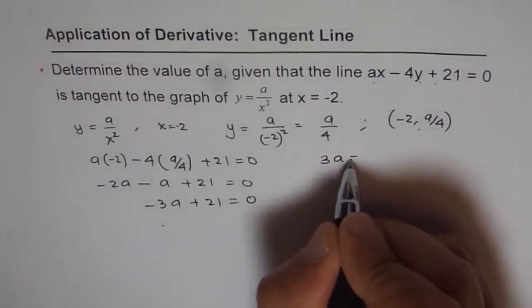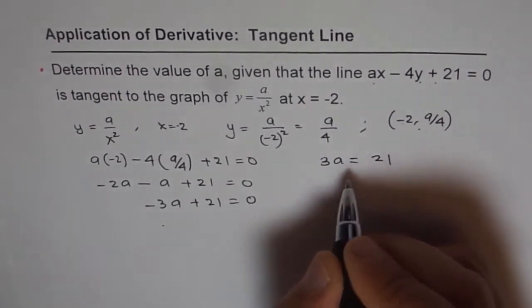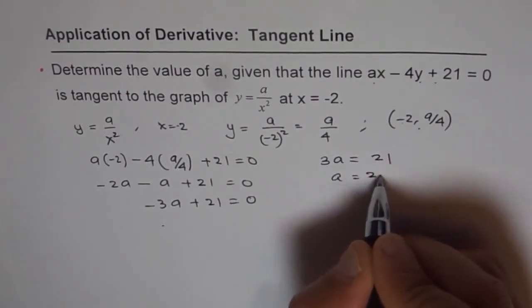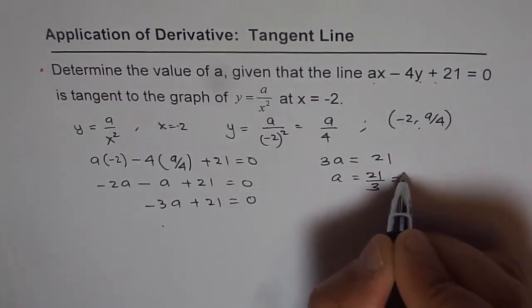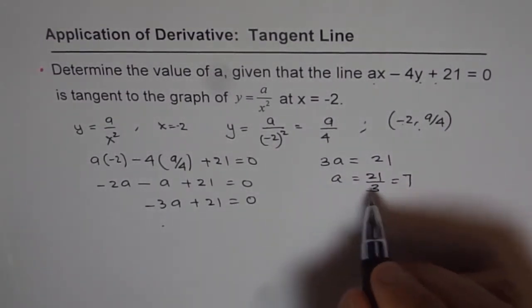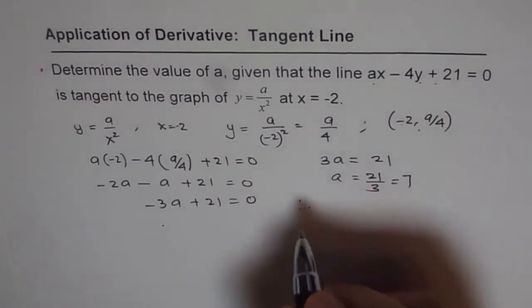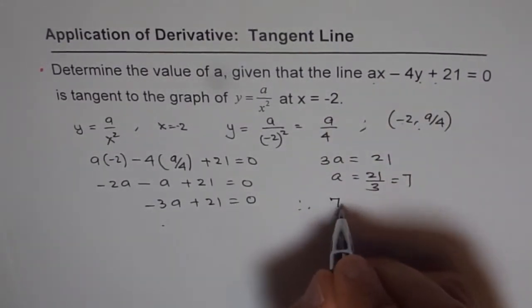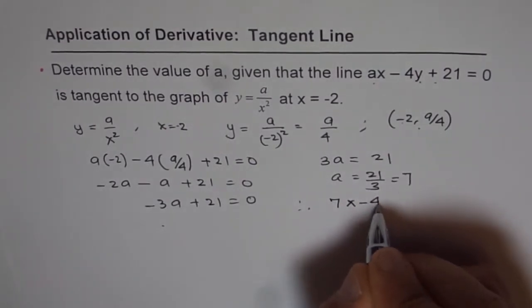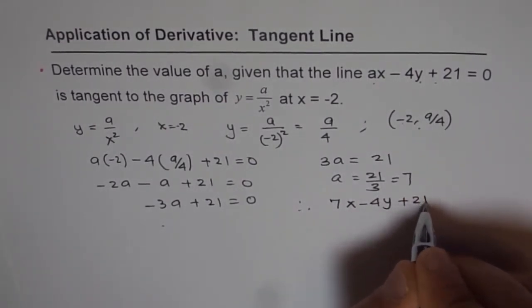So we have 3A equals 21 and A equals 21 over 3, that is 7. Do you see that? The A is 7. And therefore, the equation of lines should be 7X minus 4Y plus 21 equals 0.